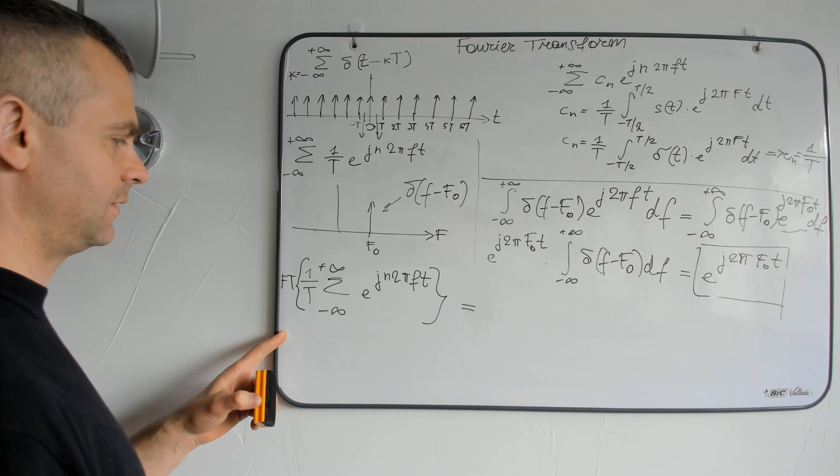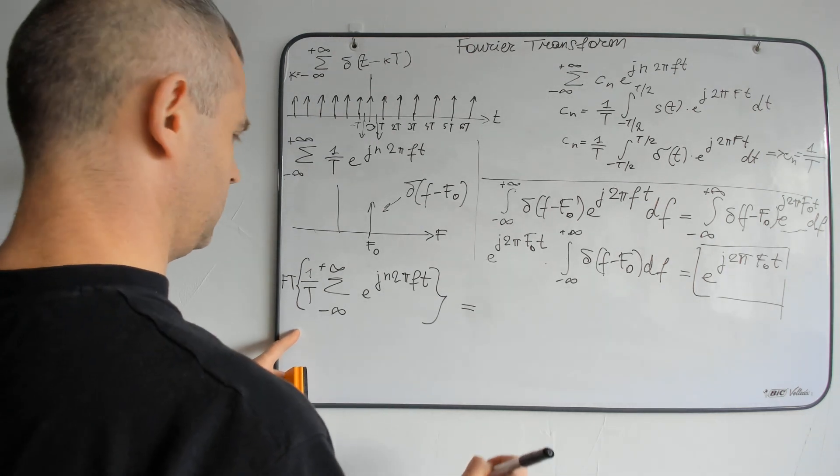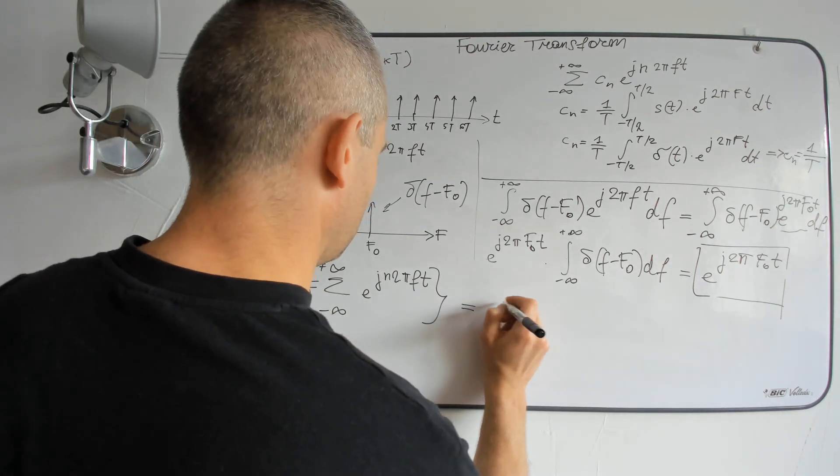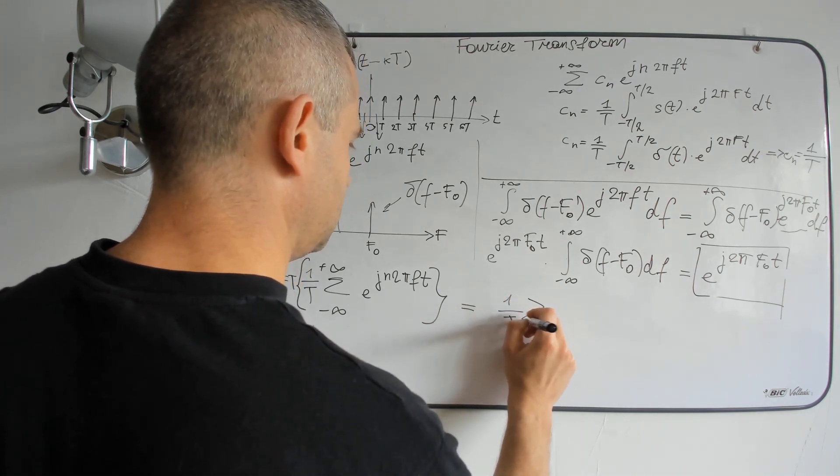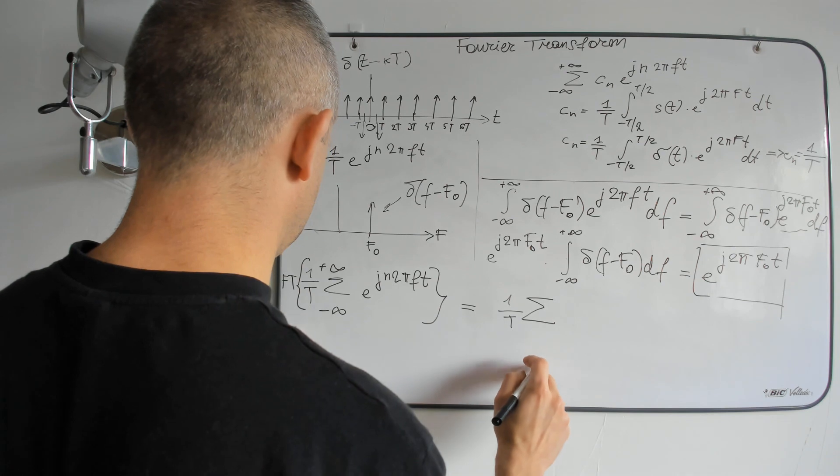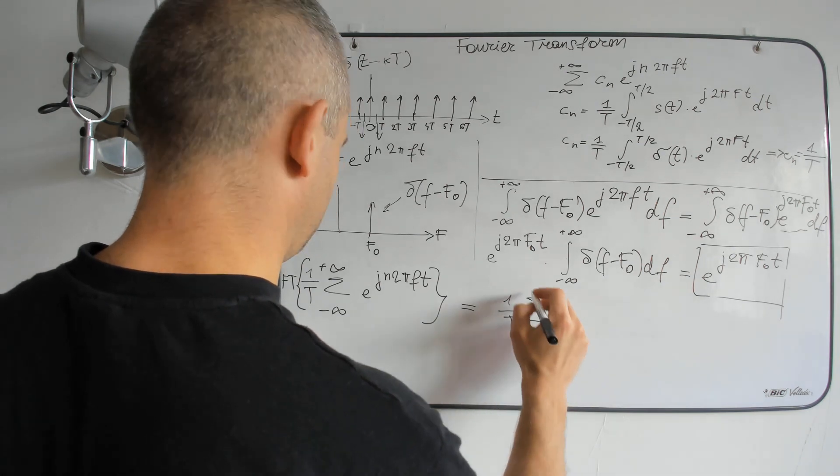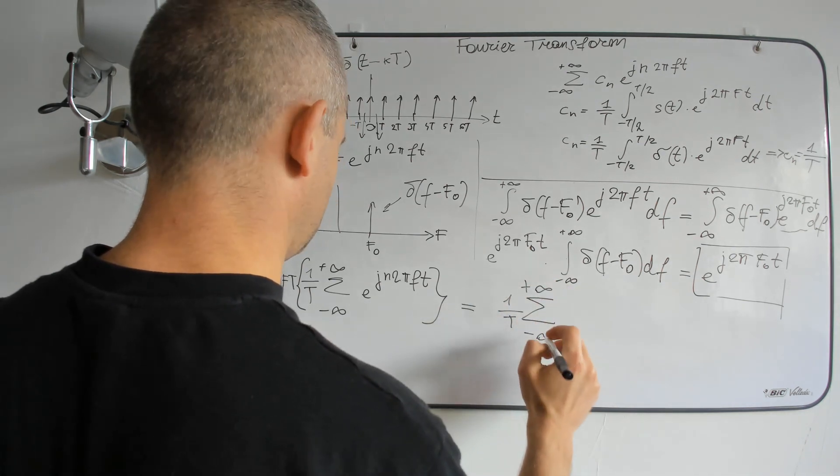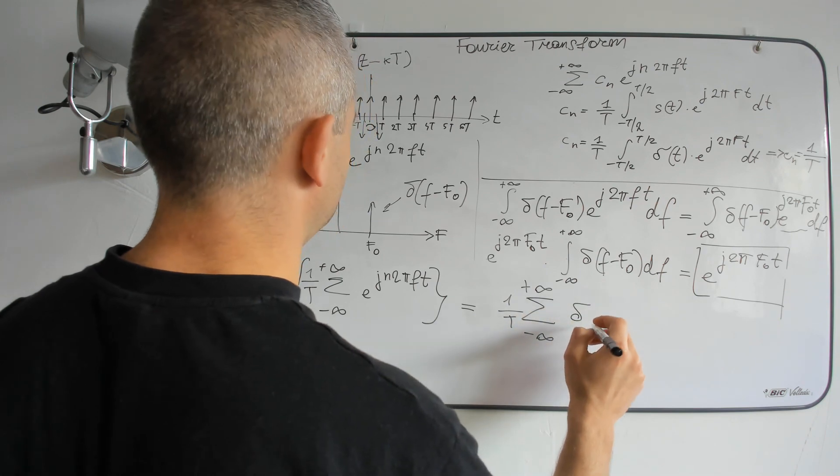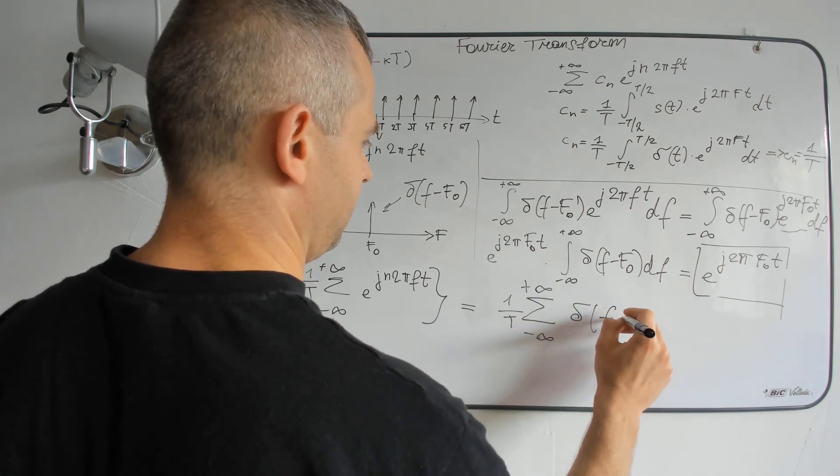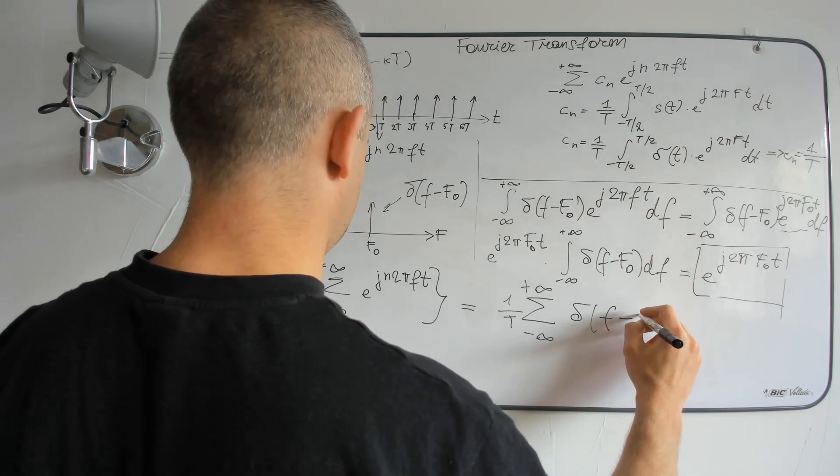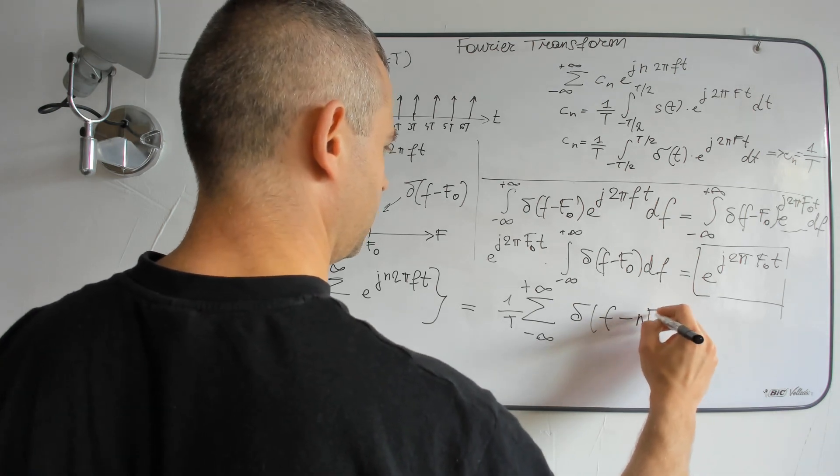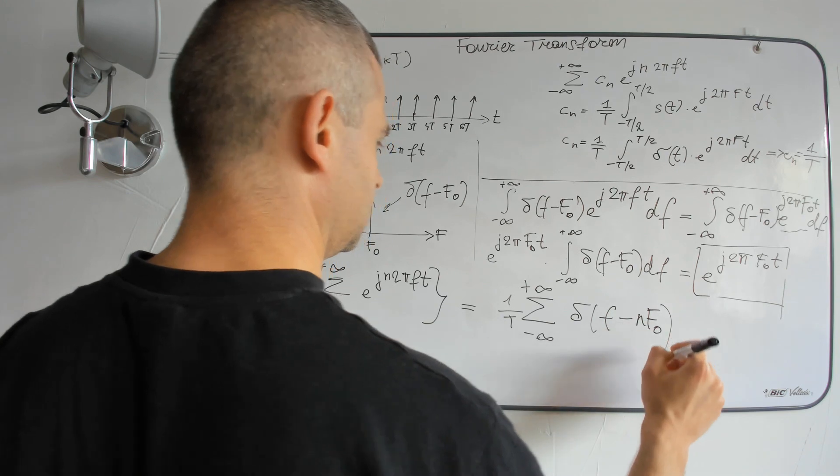And the result is 1 divided by T of f minus nf0.